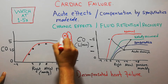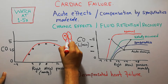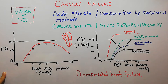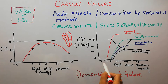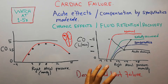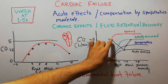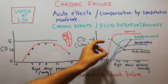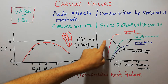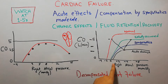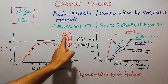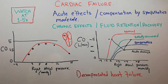Here we have the right atrium, left atrium, right ventricle, and left ventricle. The pressure in the right atrium normally is 0 mmHg. The cardiac output normally is 5 liters per minute. So in a normal heart, cardiac output is 5 liters per minute and the right atrial pressure is 0 mmHg.